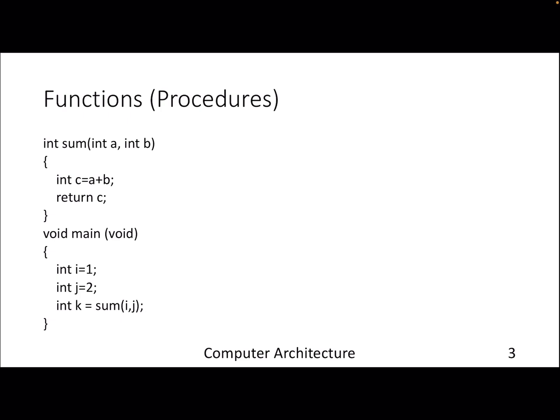Before jumping into the actual jump instructions, let's look into this high level program that is written in C kind of code. In this case we have a main function which has two variables which is calling a function called sum. The sum is nothing but adding two numbers and returning it.